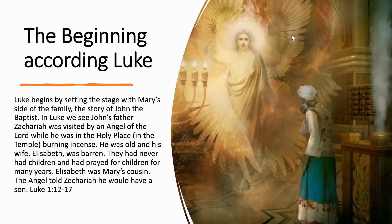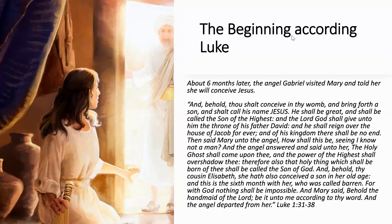Luke begins by setting the stage with Mary's side of the family. In Luke, we see John's father, Zechariah. He was visited by an angel of the Lord while he was in the holy place inside the temple in Jerusalem. He was burning incense and was old. His wife Elizabeth was barren, so they had never had children and had prayed for children for many years. Elizabeth was Mary's cousin, so the angel told Zechariah he would have a son — prophesying the birth of John the Baptist. About six months later, the angel Gabriel visited Mary and told her she would conceive Jesus.